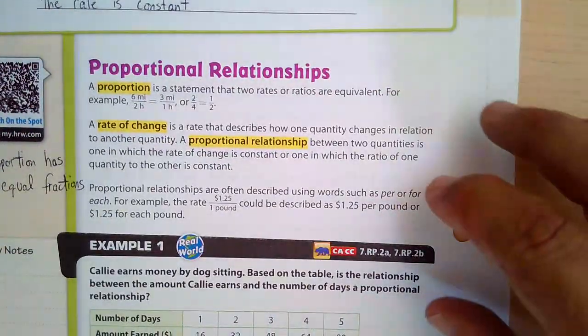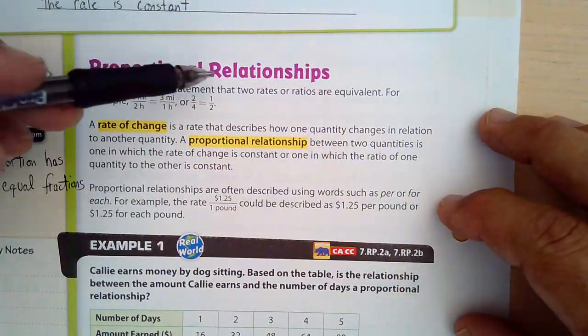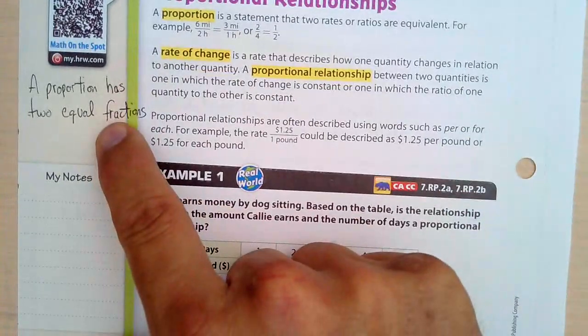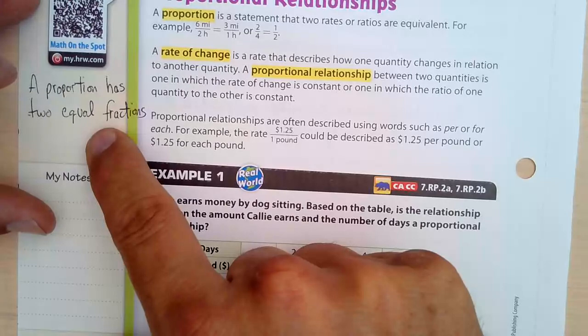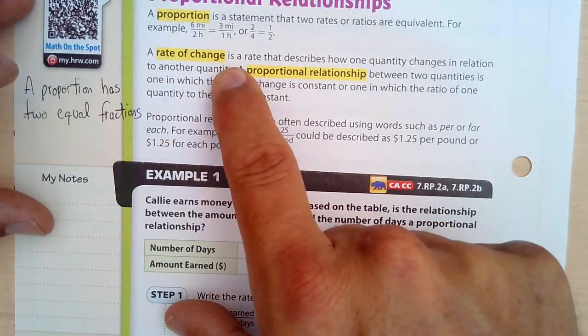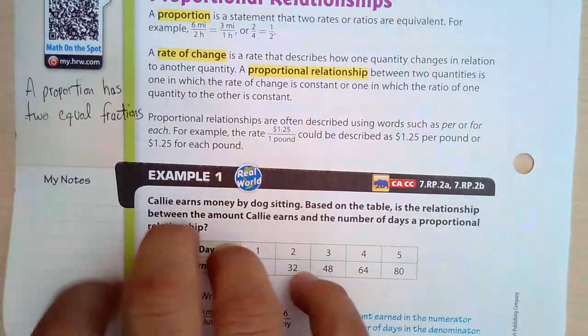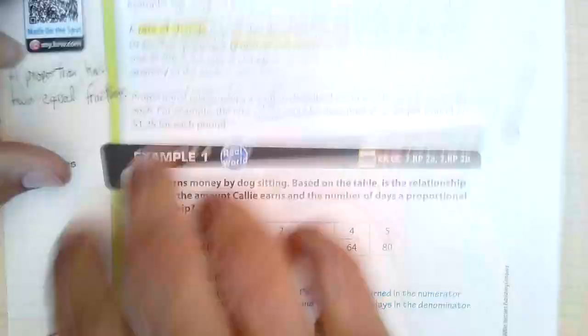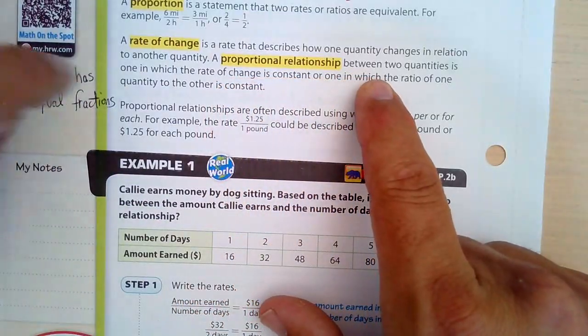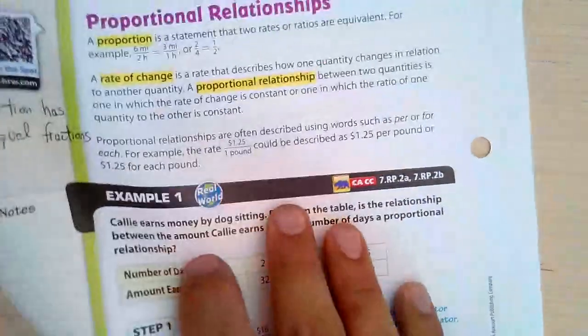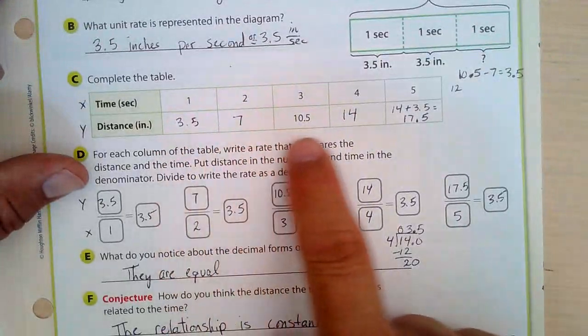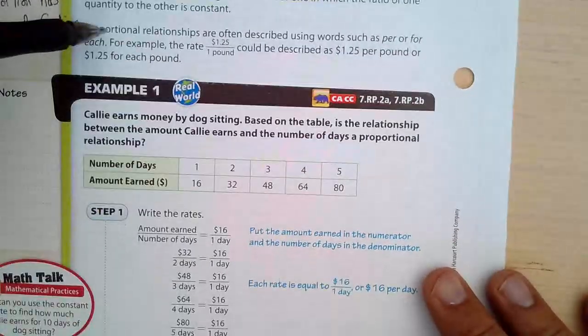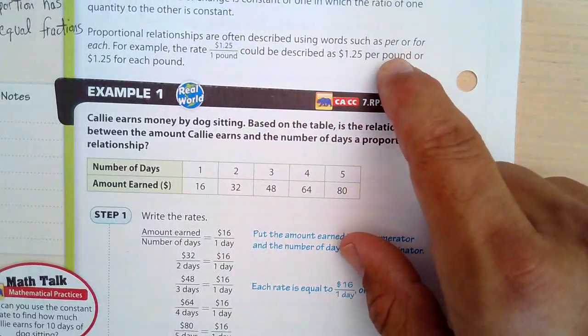Now, proportional relationships. This is way important right here. A proportional relationship, a proportion is a statement of two rates or equal ratios. I just say a proportion has two equal fractions, and I put that right over here. And you should put that in the margin, just to remind you. Two equal fractions. Now, a rate of change is a rate that describes how one quantity changes in relation to another. Now, our rate of change over here, our rate of change was 3.5 inches per second. That's the change. Now, a proportional relationship between two quantities is one in which the rate of change is constant. So over here, this proportional relationship, this all here was a proportional relationship because the rate of change was the same.